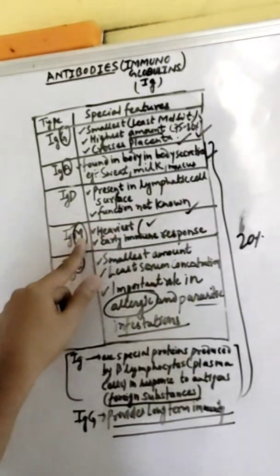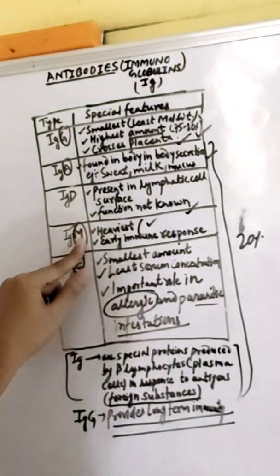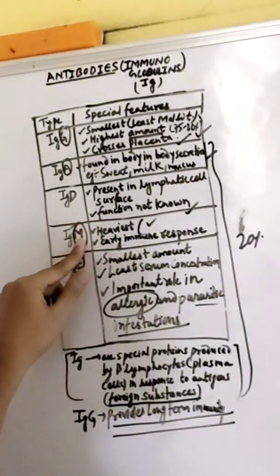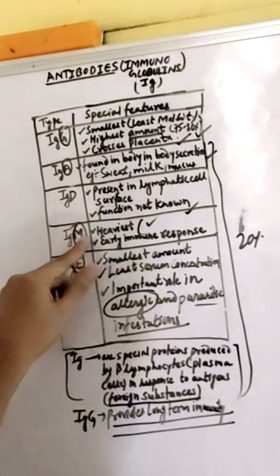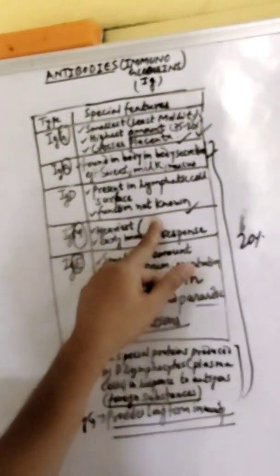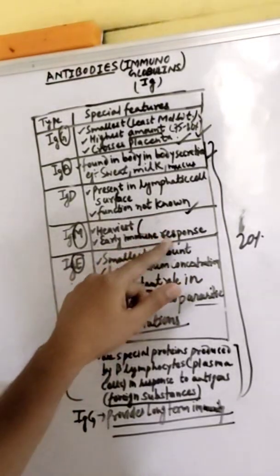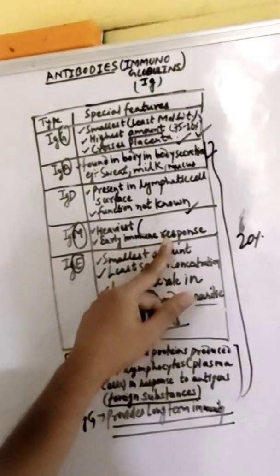IgM stands for most recent infection. It indicates the most recent infection and is the heaviest antibody. It indicates early immune response.